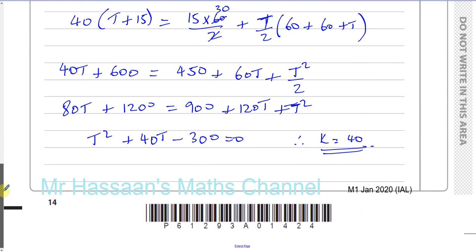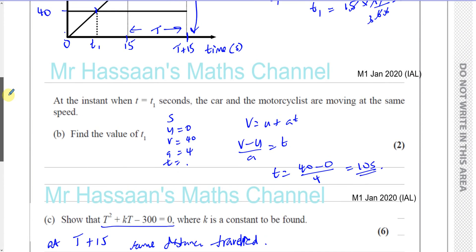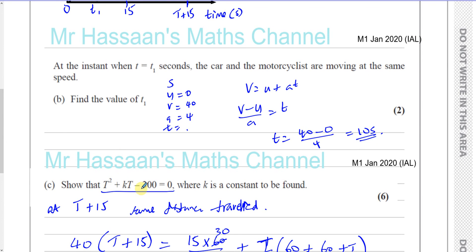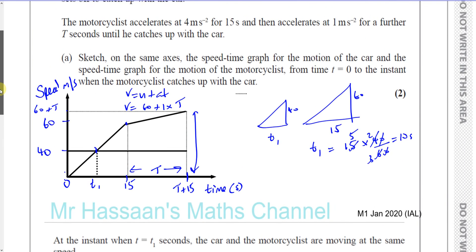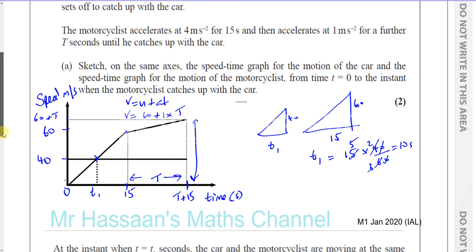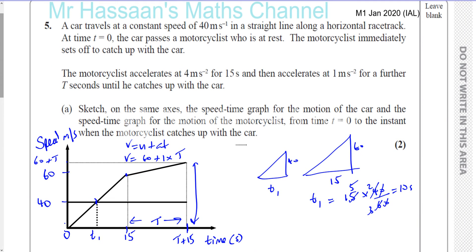We could deduce from the question that by the time you reach T plus 15, both have traveled the same distance because that's when the motorcyclist catches up with the car. So the areas under the two graphs must be equal. There we have the answer to question number 5.